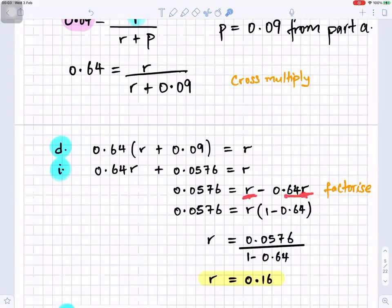R is common, so it goes out of the bracket. So it becomes R bracket 1 minus 0.64. It's times there, you take it to that side, it becomes divide. So R is 0.0576 divided by 1 minus 0.64. So that gives R to be 0.16.